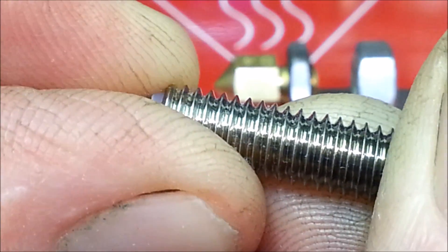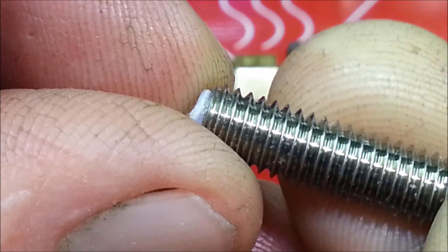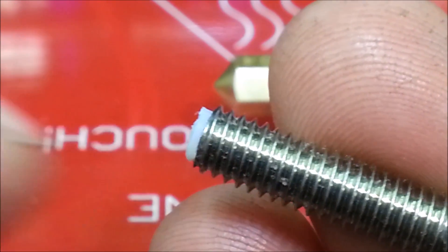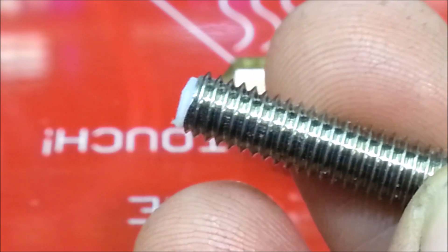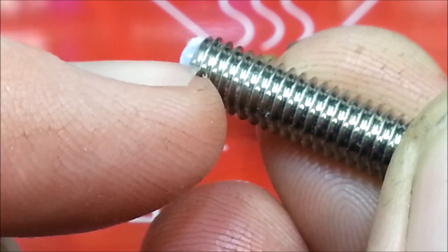And then just shave it, well in my case I used the Dremel tool to shave it down a little bit. But you can use a file, you can use a sharpening stone, anything that would just kind of shave it down so it's just a little past the threads.